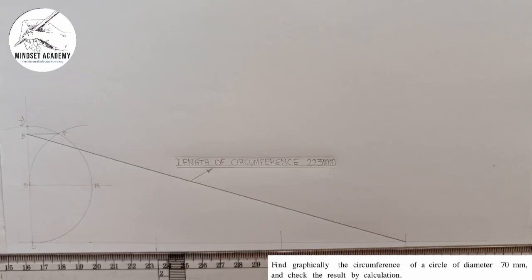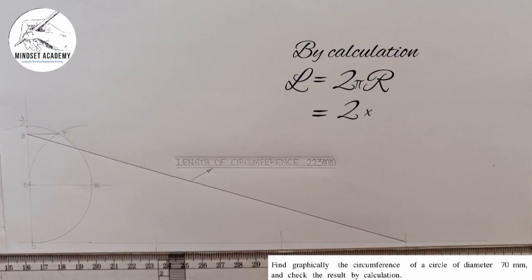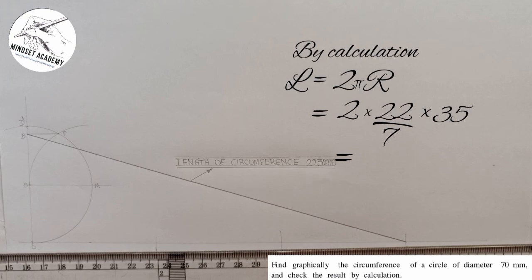The next challenge here is we should check the result by calculation. By calculation, we know very well that the length of the circumference of a circle L is given as 2πr. 2 times π means 22/7 multiply by r. R is the radius of the circle, which is 35. If I multiply 2 × 22 × 35 divided by 7, we're having 220mm. You see that it's very close.